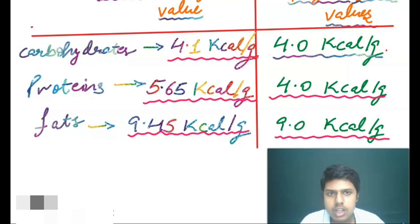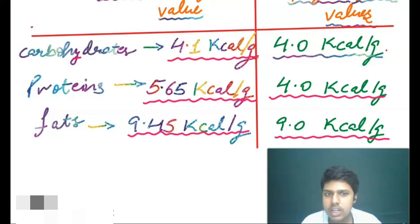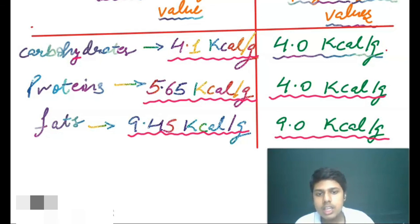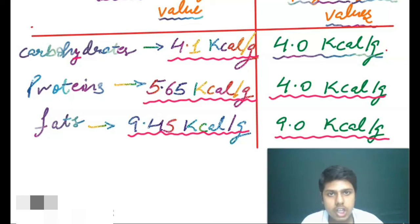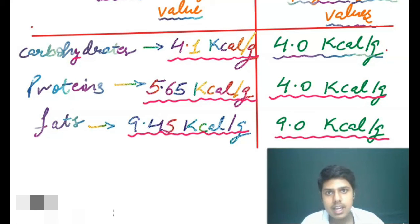In a comparative study: carbohydrates have 4.1 kcal/g gross calorific value and 4.0 kcal/g physiological value — a difference of 0.1. Proteins have 5.65 kcal/g gross and 4.0 kcal/g physiological — a difference of 1.65 kcal/g. Fats have 9.45 kcal/g gross and 9.0 kcal/g physiological — a difference of 0.45 kcal/g. These were the important values from the yellow box in NCERT. Thank you, and see you in the next video.